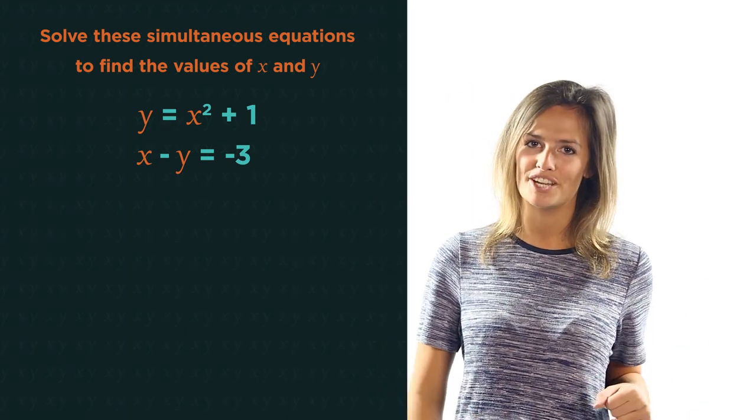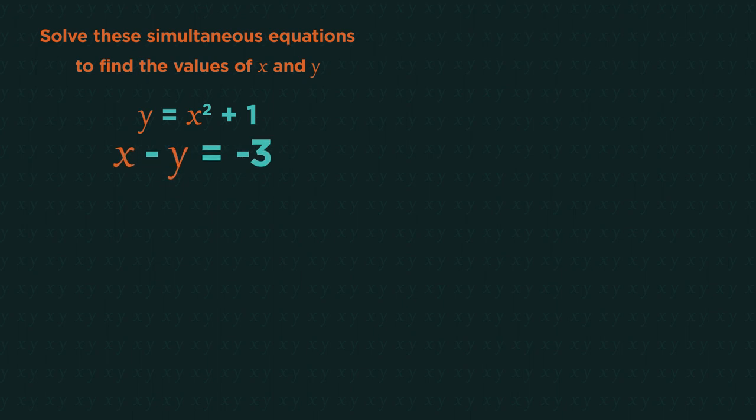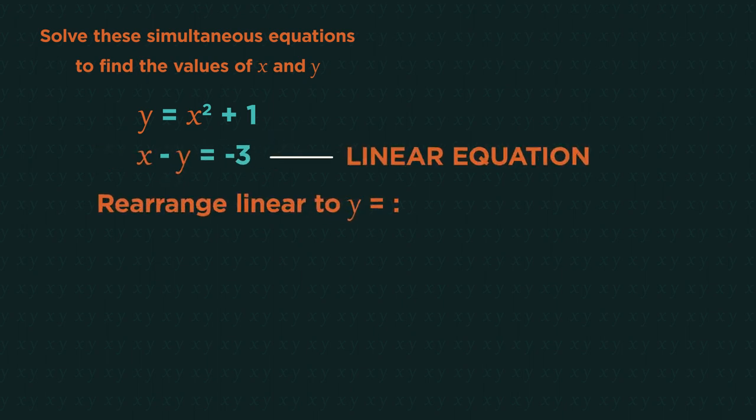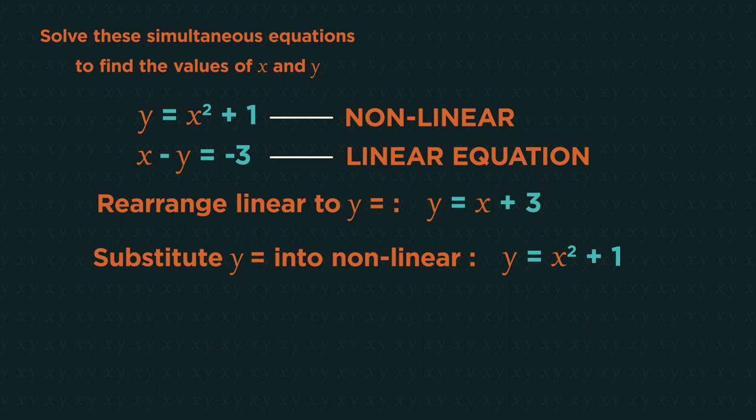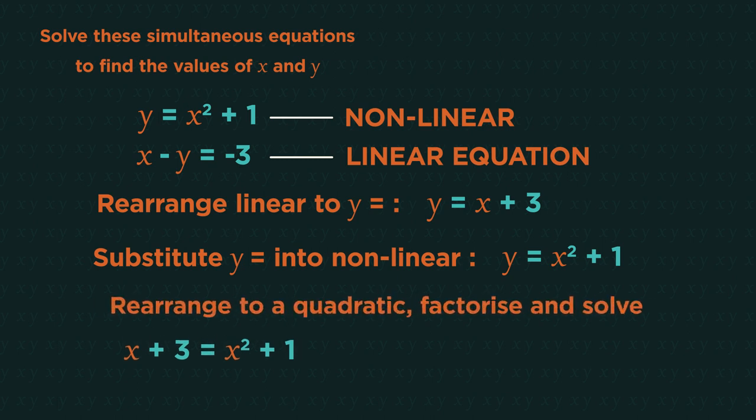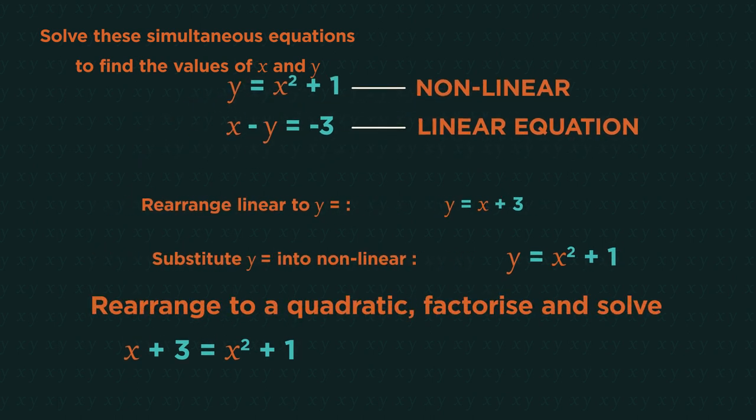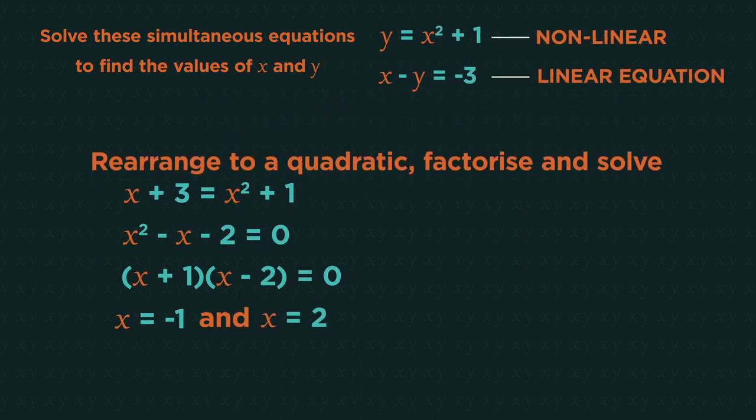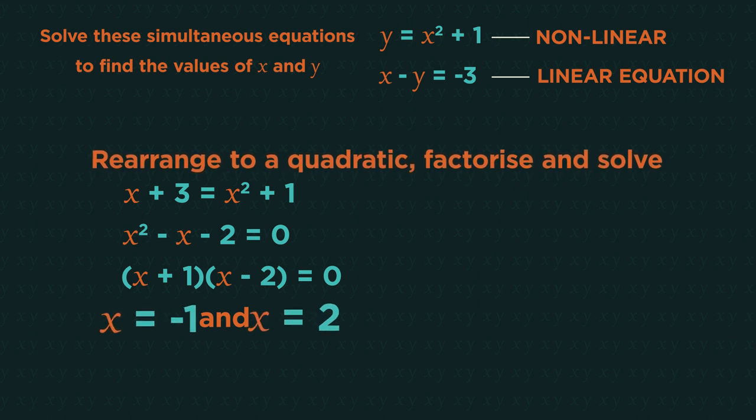Let's look at an example of how to solve simultaneous equations by substitution. Start by rearranging the linear equation to become y equals, so y equals x plus three. We can now substitute this y equals into the non-linear equation, so in place of the y we write x plus three equals x squared plus one. Rearrange this to get a quadratic, then factorize and solve it to get x equals negative one and x equals two.